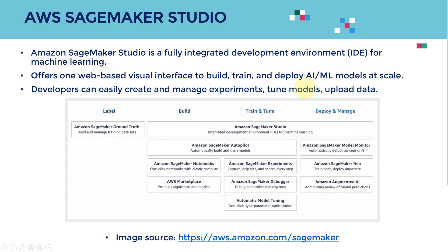After the model is deployed, you can do a lot of things as well. You can monitor the model — look at the model predictions and see if the model is drifting, performing well, or encountering new data it has never seen before. You can also deploy models using SageMaker Neo, which allows you to deploy the model on edge devices — for example, on a fridge, a microcontroller, or similar hardware.